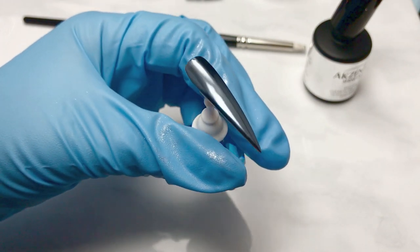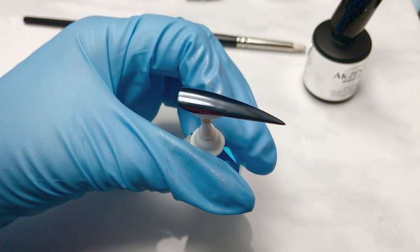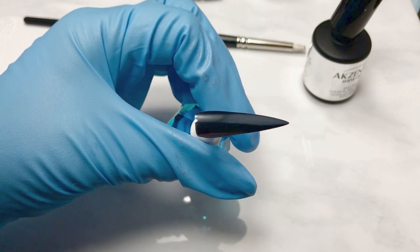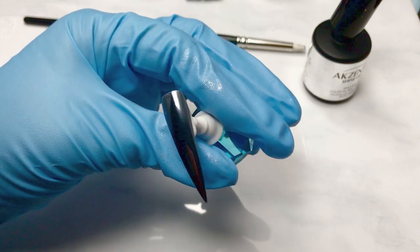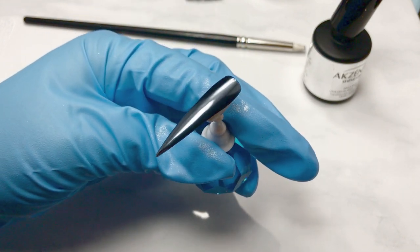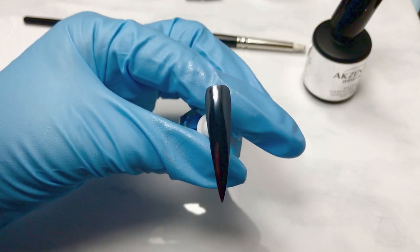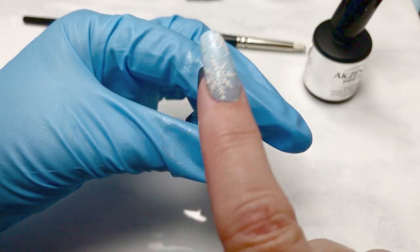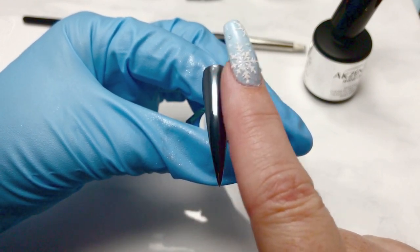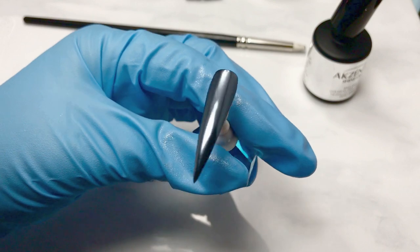Alright here is the nail out of the lamp and you can see again that gorgeous gunmetal gray chrome look. Looks just like the hematite stone. It is very mirror. You can see my reflection, my finger there in the nail.